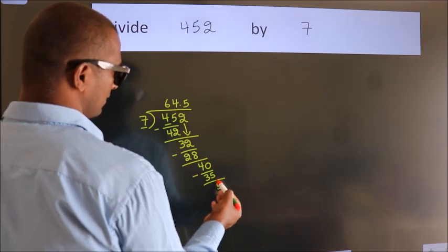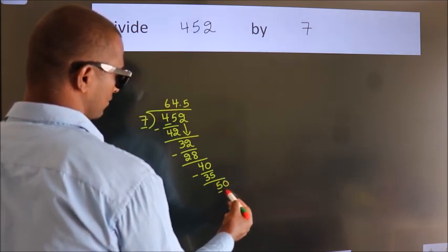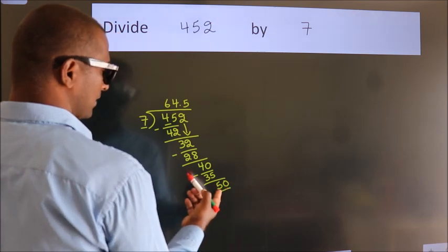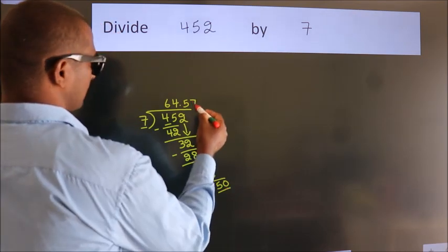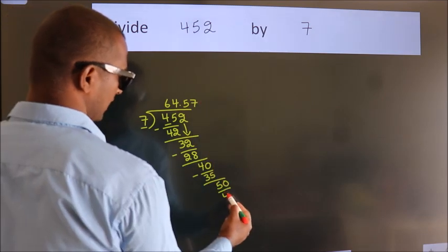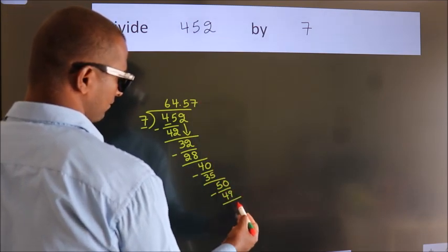After this, we already have the decimal, so directly take 0, giving us 50. A number close to 50 in the 7 table is 7 times 7, which is 49. Now we subtract. We get 1.